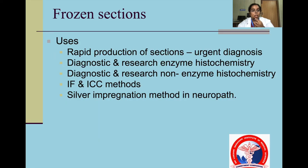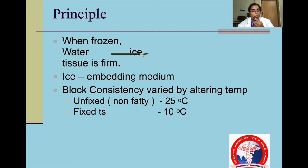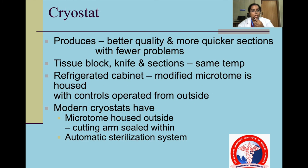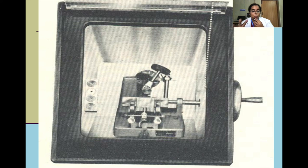Frozen sections are used for rapid production of sections for urgent diagnosis, diagnostic and research enzyme histochemistry, immunofluorescence, and silver impregnation method in neuropathology. When water is frozen, it becomes ice and the tissue is given a firm consistency using an ice embedding medium. Block consistency varies: unfixed non-fatty tissue at minus 25 degrees and fixed tissue at 10 degrees. A cryostat produces better quality, quicker sections with fewer problems. The refrigerated cabinet houses the microtome with controls operated from outside.